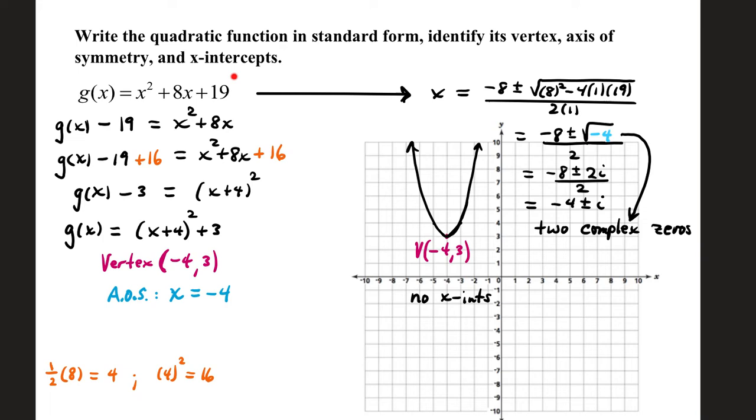We have a new function, g(x) equals x squared plus 8x plus 19. If we come over here to the side, use the quadratic formula to find x-intercepts, because this one won't factor with whole numbers to give us some friendly x-intercepts. In fact, it turns out there are no x-intercepts, but you don't know that until you go through this process. Put your numbers through the quadratic formula. This time we get a discriminant of negative 4. A discriminant that's negative tells us we have two complex zeros.